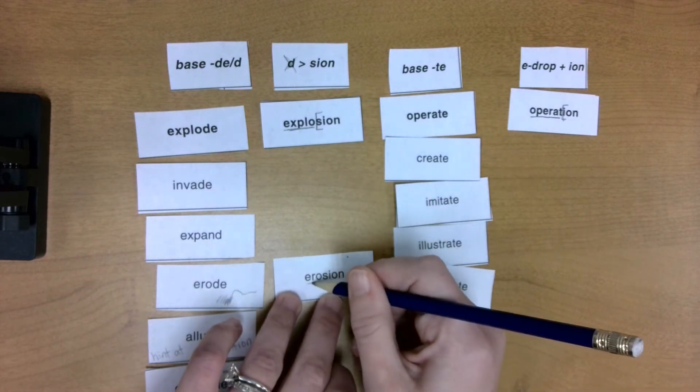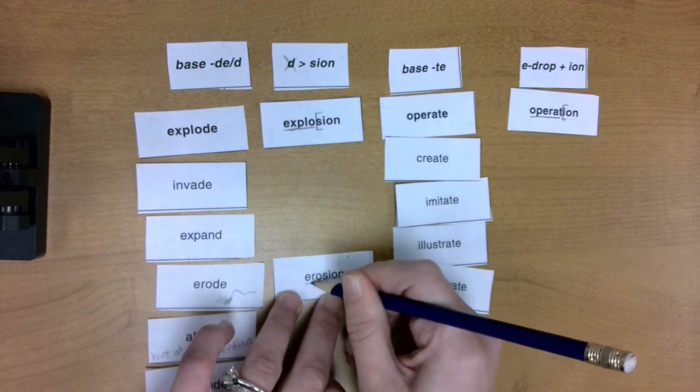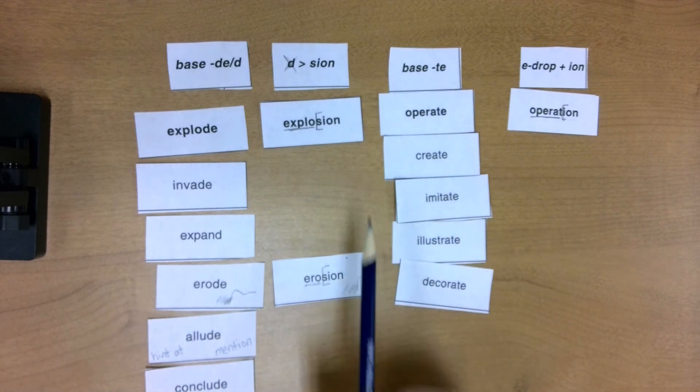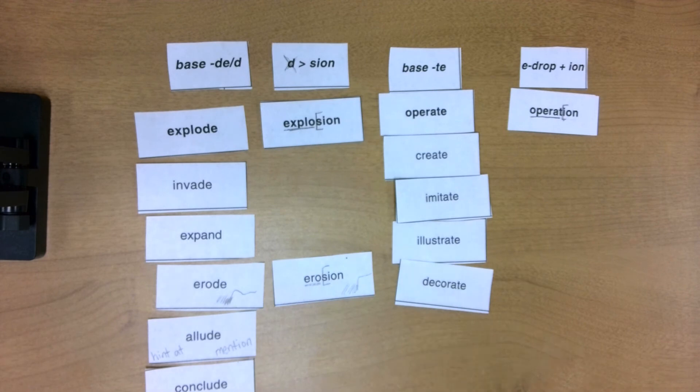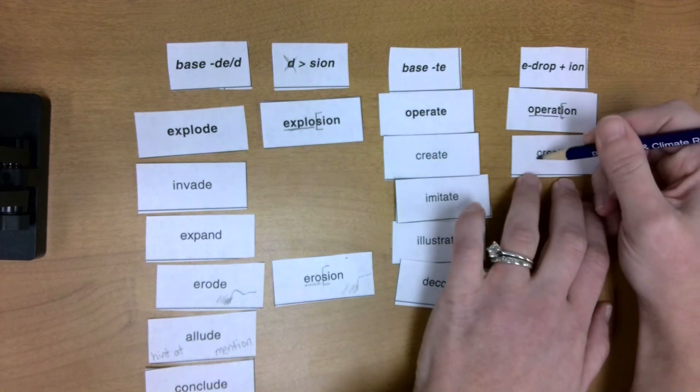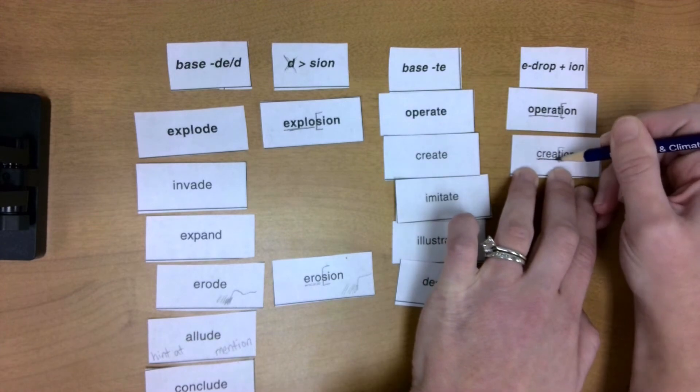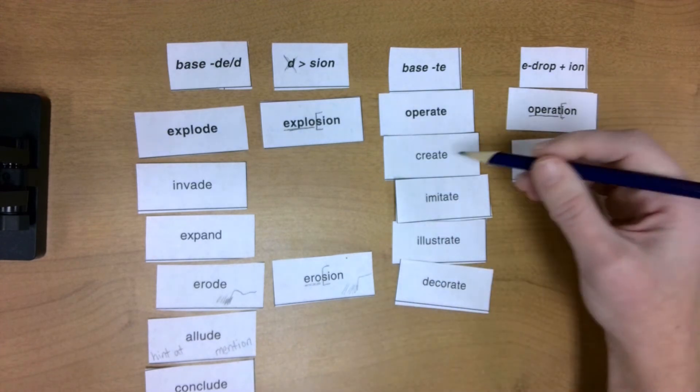Let's go ahead and look at that base word erode inside of erosion. Okay, so that one we had a D-E that changed to S-I-O-N. Now look at creation. I see, I'm chopping off that T-I-O-N. See my base word create, right? Where I had an E drop.